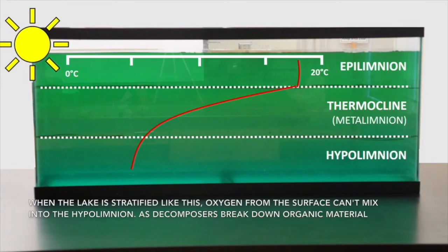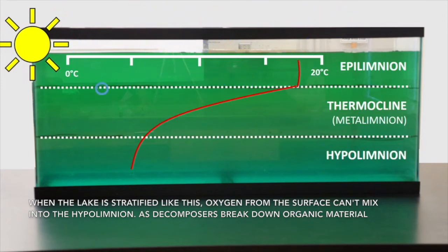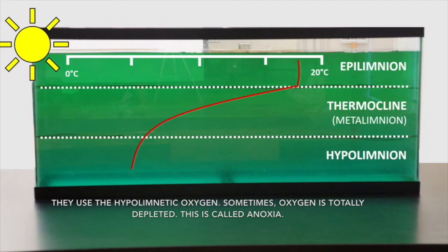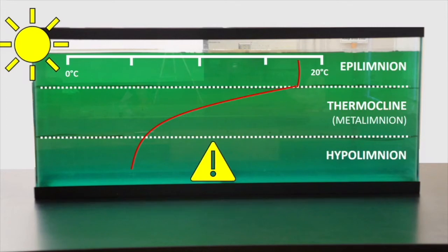When the lake is stratified like this, oxygen from the surface can't mix into the hypolimnion. As decomposers break down organic material, they use the hypolimnetic oxygen. Sometimes, oxygen is totally depleted — this is called anoxia.